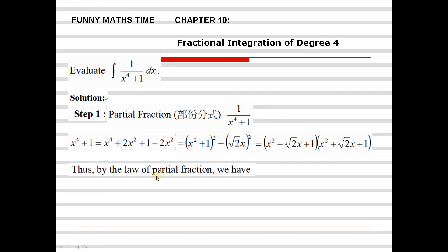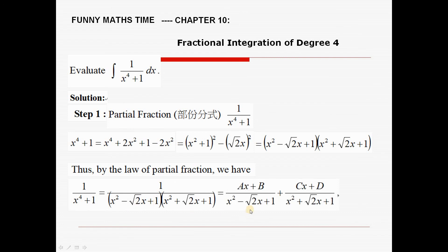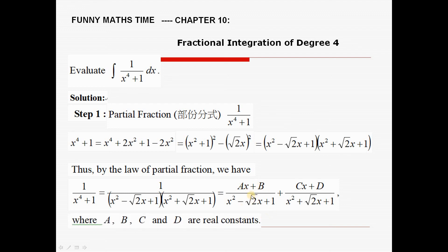By the law of partial fractions, 1 over x⁴ + 1 equals two parts: (Ax + B) over (x² − √2·x + 1), plus (Cx + D) over (x² + √2·x + 1), where a, b, c, d are real constants. The next step is to find the values of a, b, c, d, and then do the integration on each part separately.